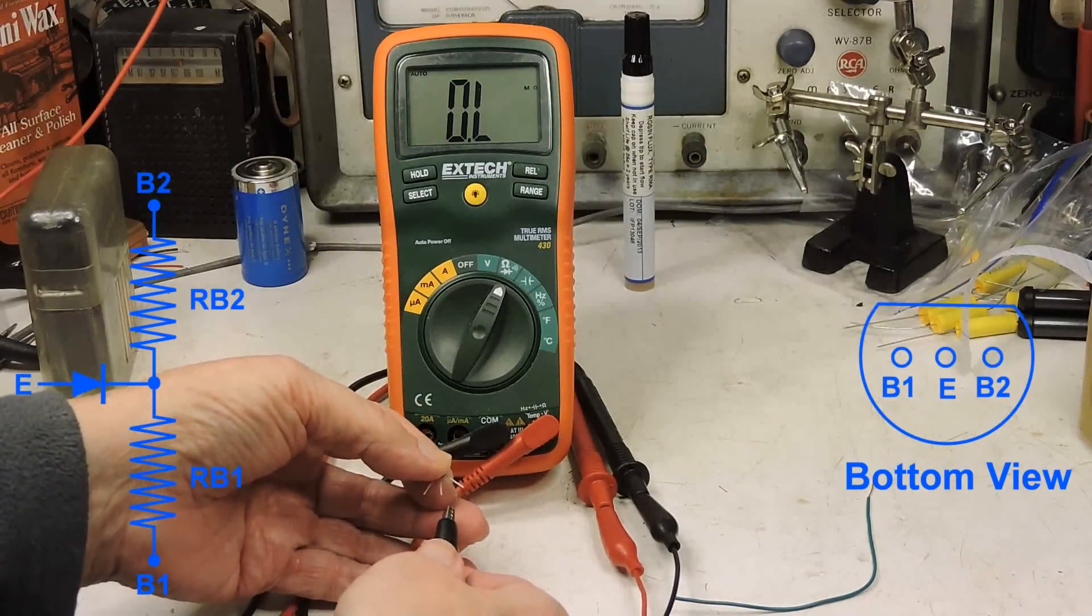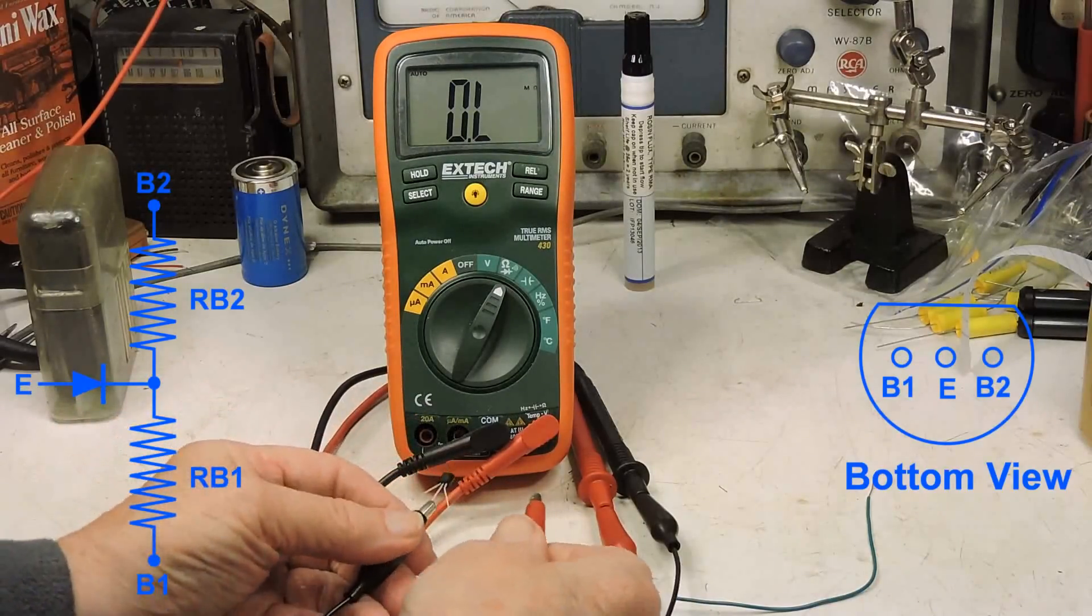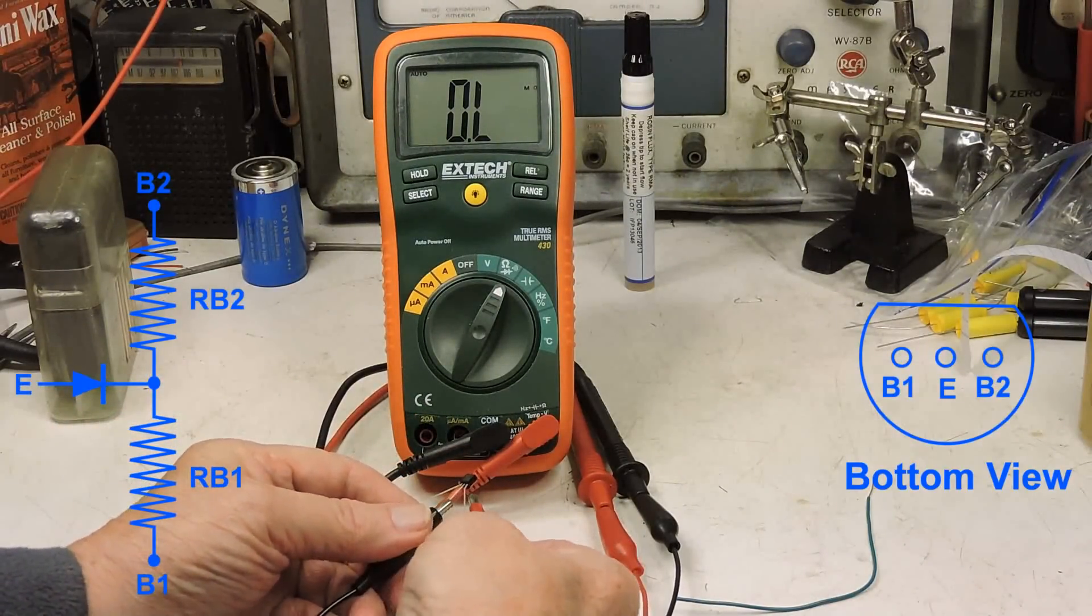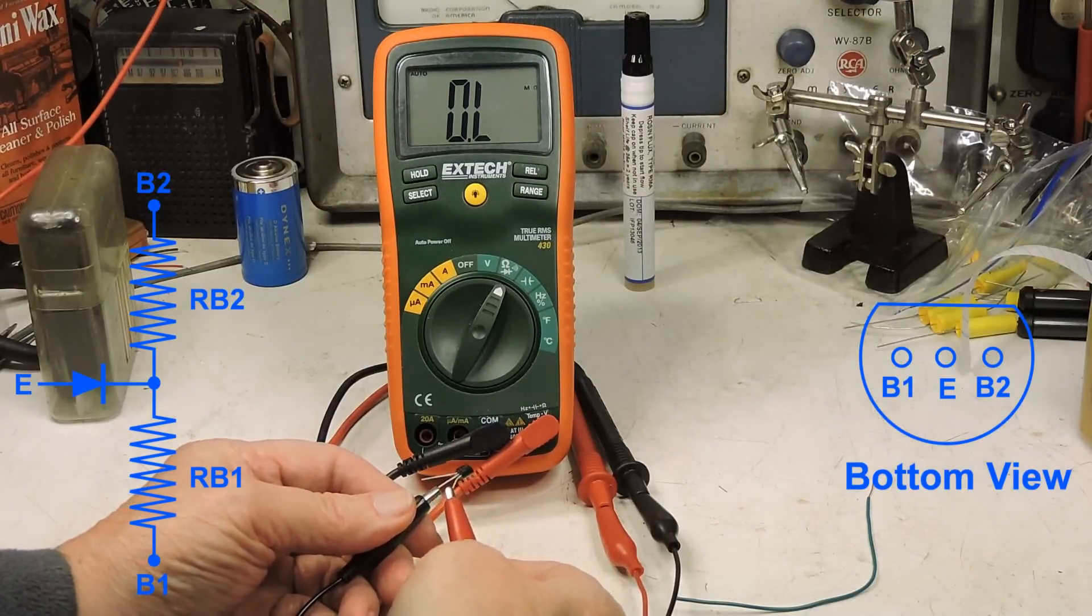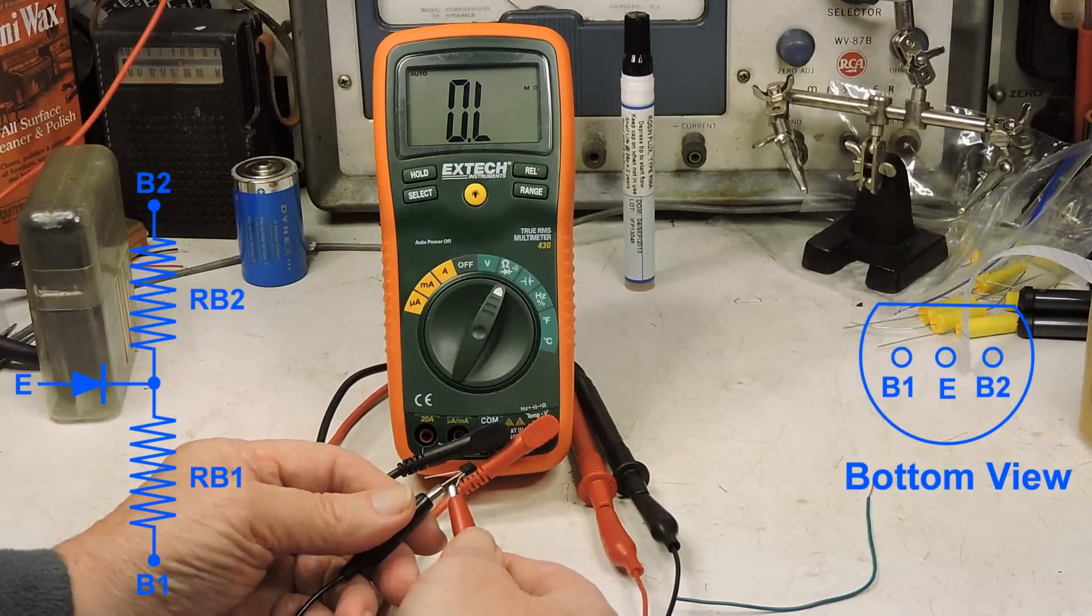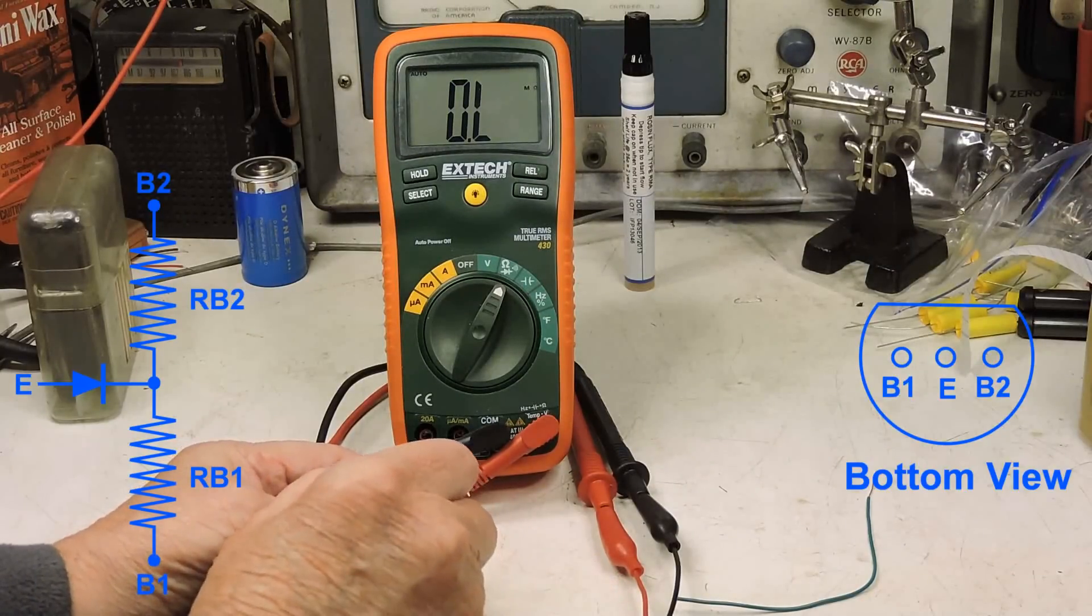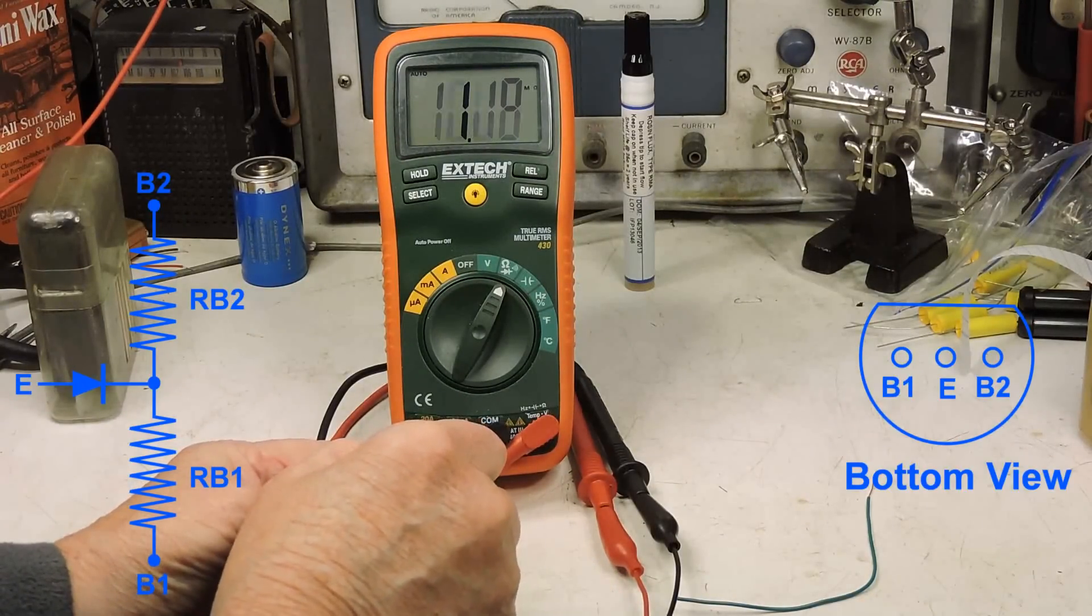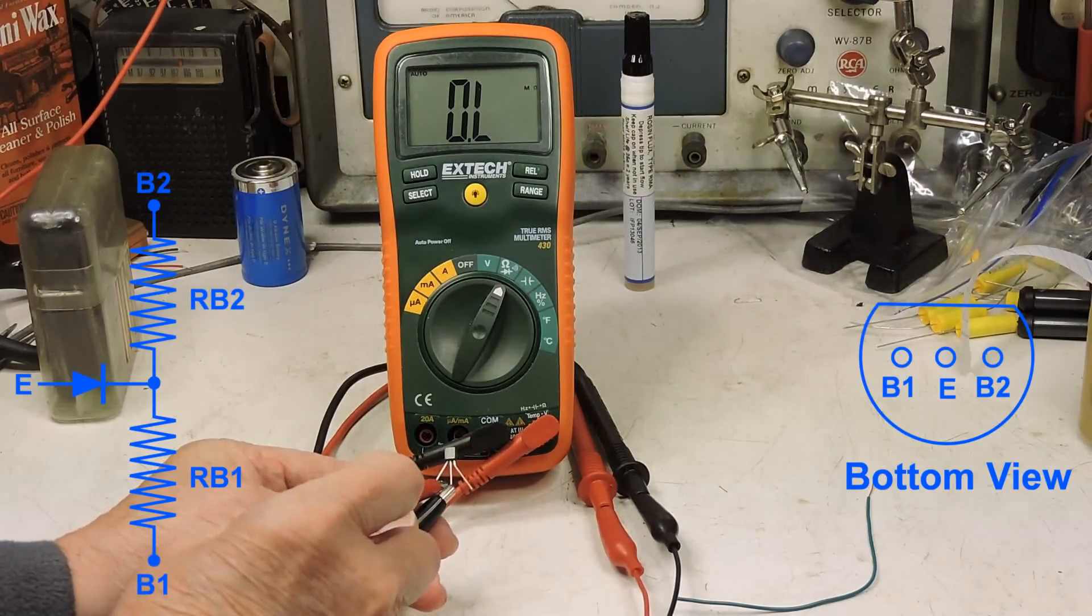Now I'm going to reverse that and put the negative lead on E, infinite ohms, because the diode that's in there is reverse biased. Now I've got it on B1, infinite ohms again.